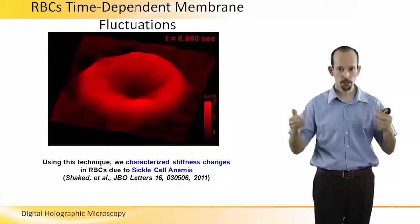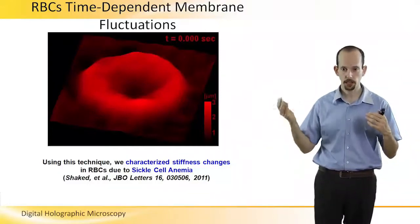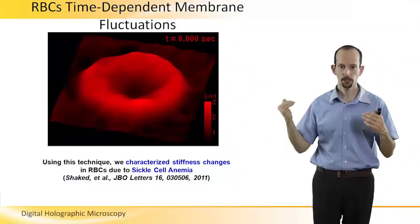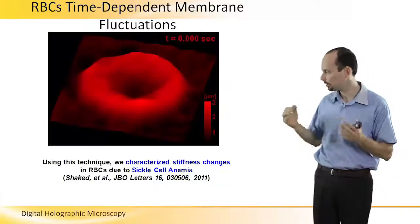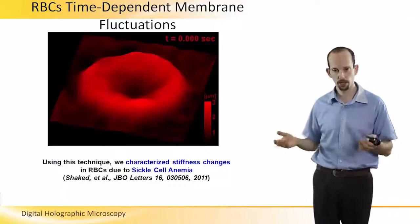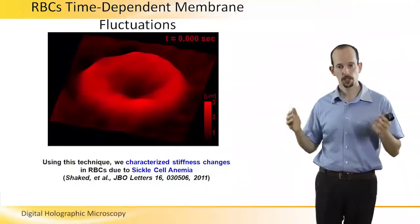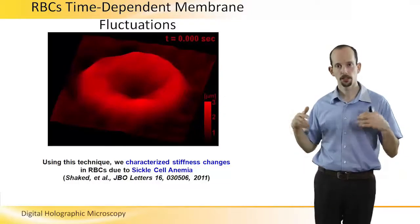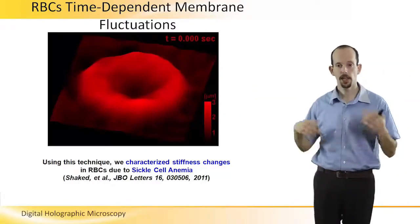And using these stiffness properties changes, we can characterize sick red blood cells. For example, in this paper, I've shown that we can use this technique in order to characterize sickle cell anemia, in which the red blood cells are stiffer or fluctuate less than healthy cells.